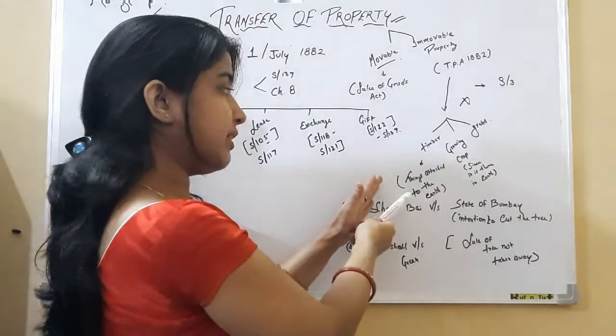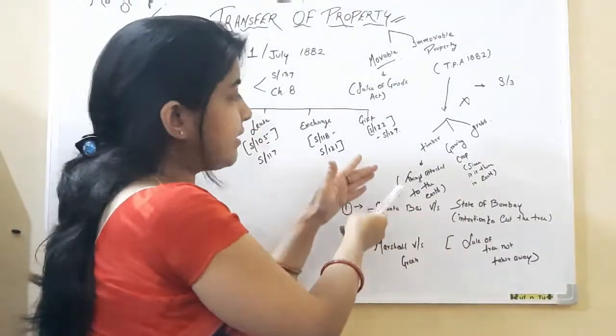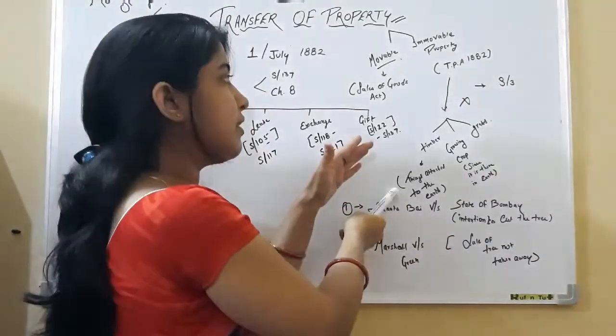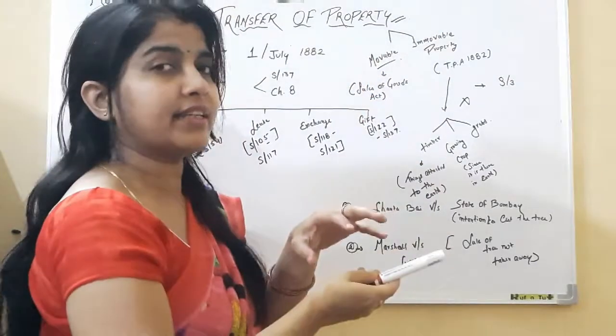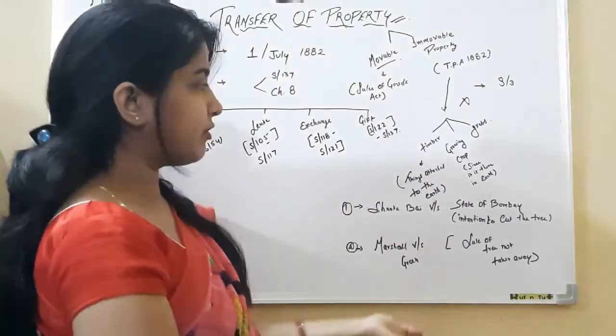Timber means the trees. Till it is attached to the earth, it is immovable property. But as soon as we take out that thing from the earth, it becomes a movable property.